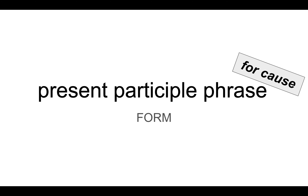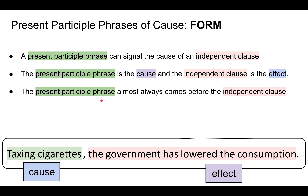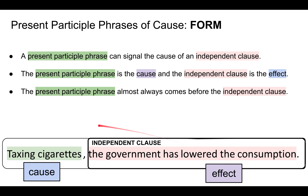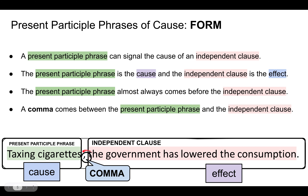Now let's talk about the form of present participle phrases. When talking about the form, the first rule is that the present participle phrase almost always comes before the independent clause. So the independent clause comes second — the government has lowered the consumption — and the participle phrase, taxing cigarettes, comes first. We must also notice that a comma comes between the present participle phrase and the independent clause.